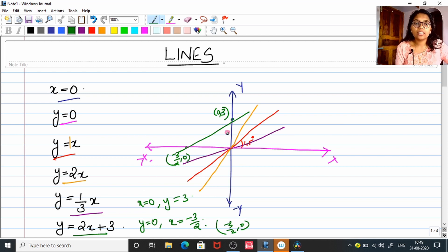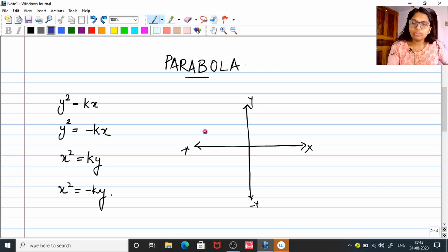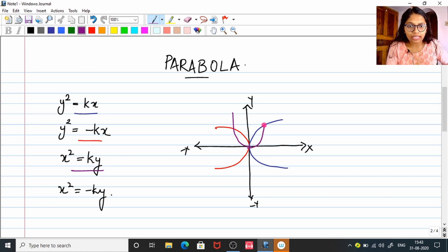As I said, here there is an intercept. The y-axis is crossed by this line only because of this extra term. Moving on to parabola: y² = kx is a parabola enclosing your positive x-axis, y² = -kx encloses your negative x-axis, and x² = ky encloses your positive y-axis.